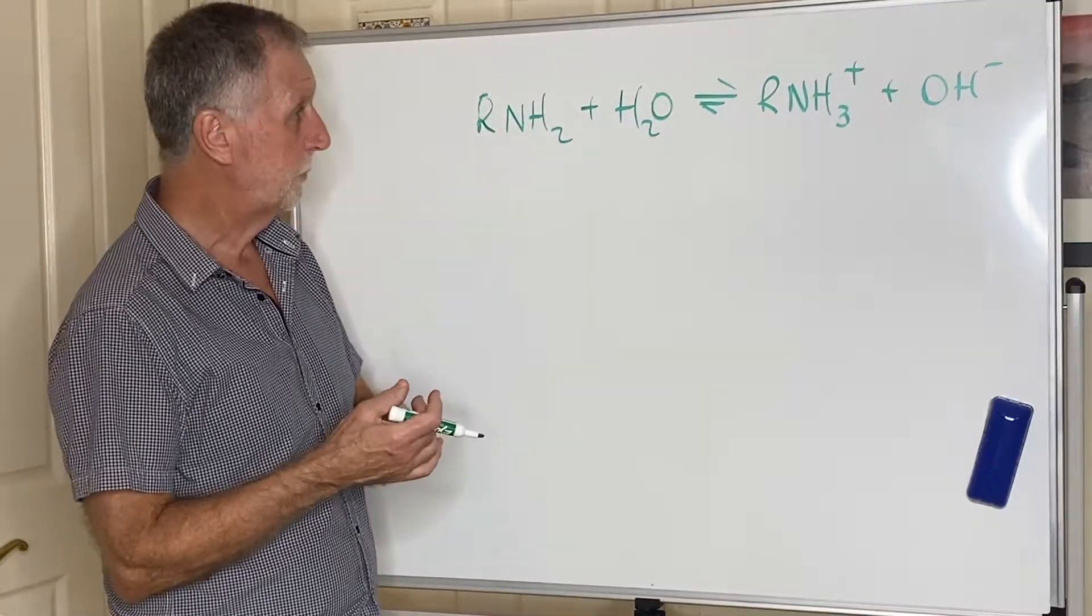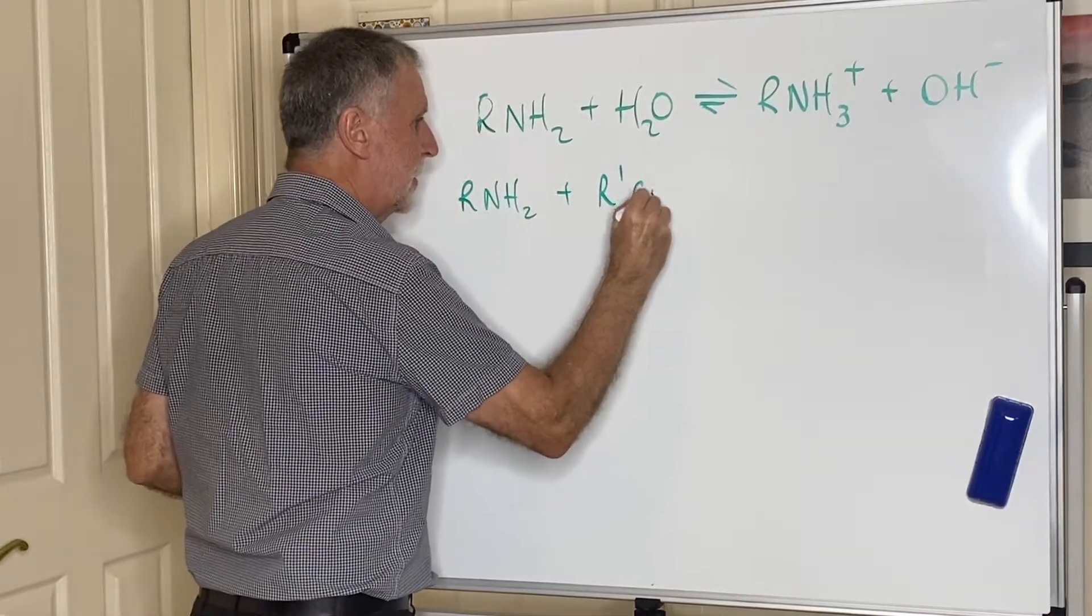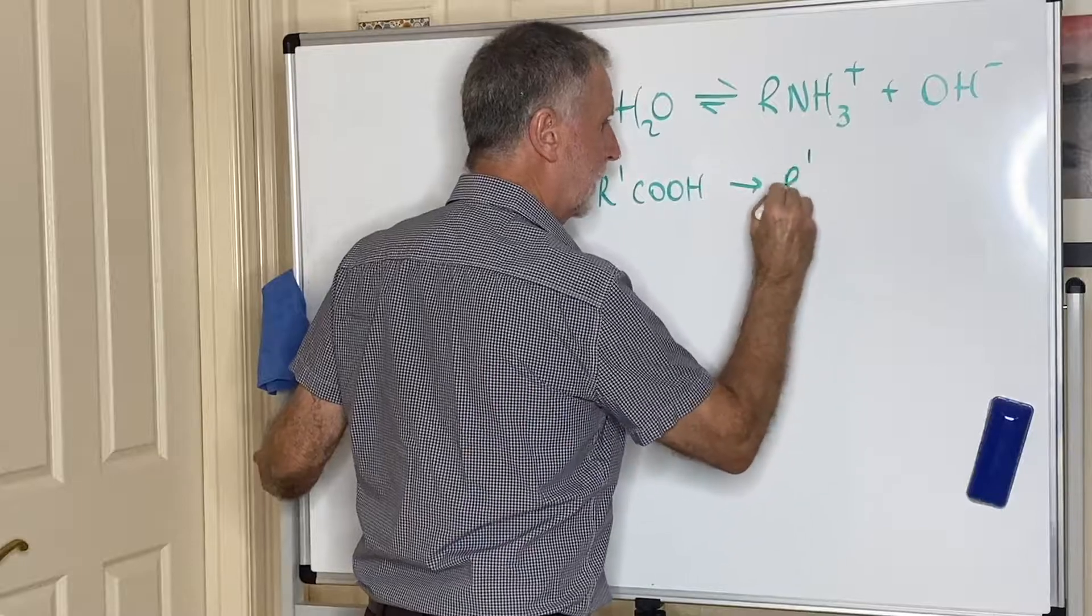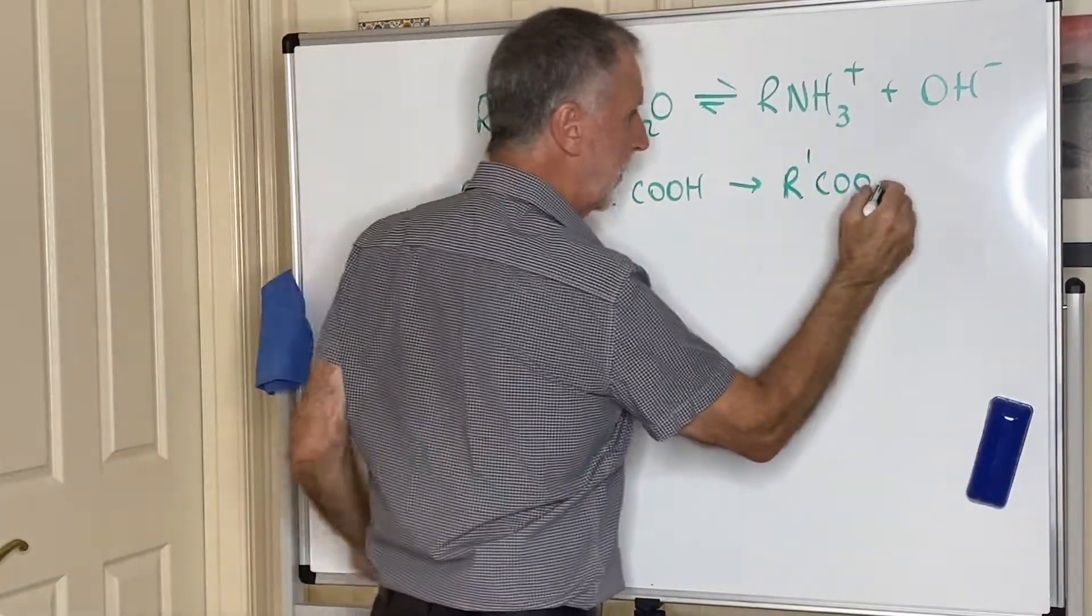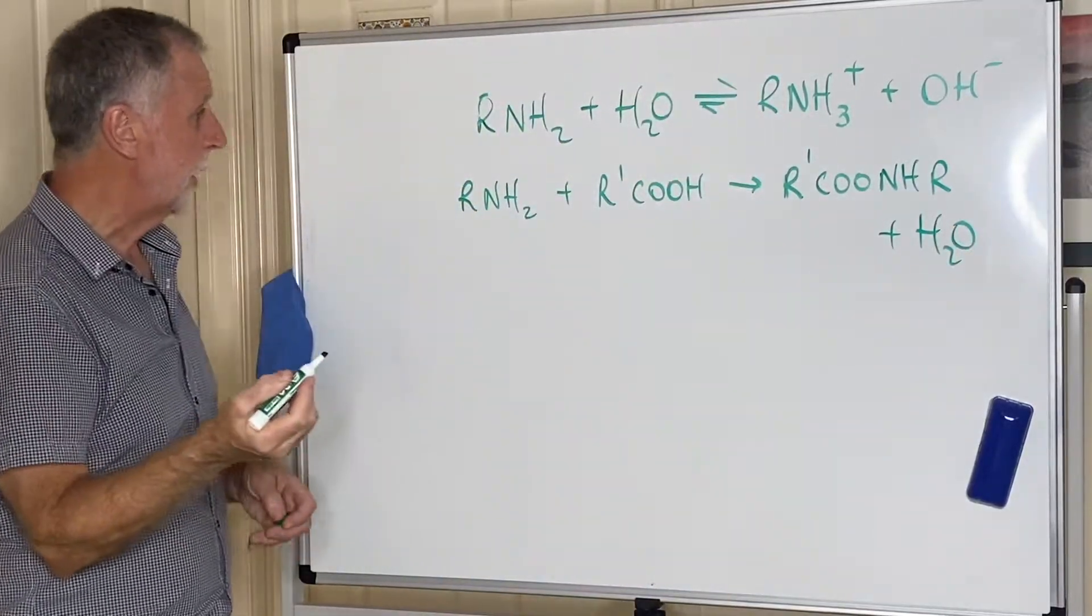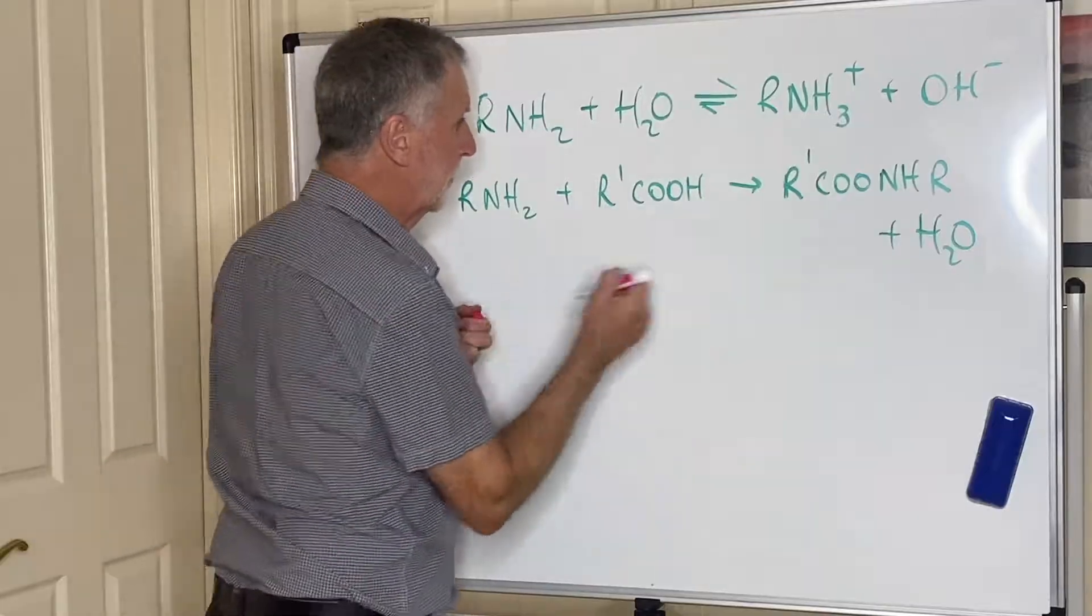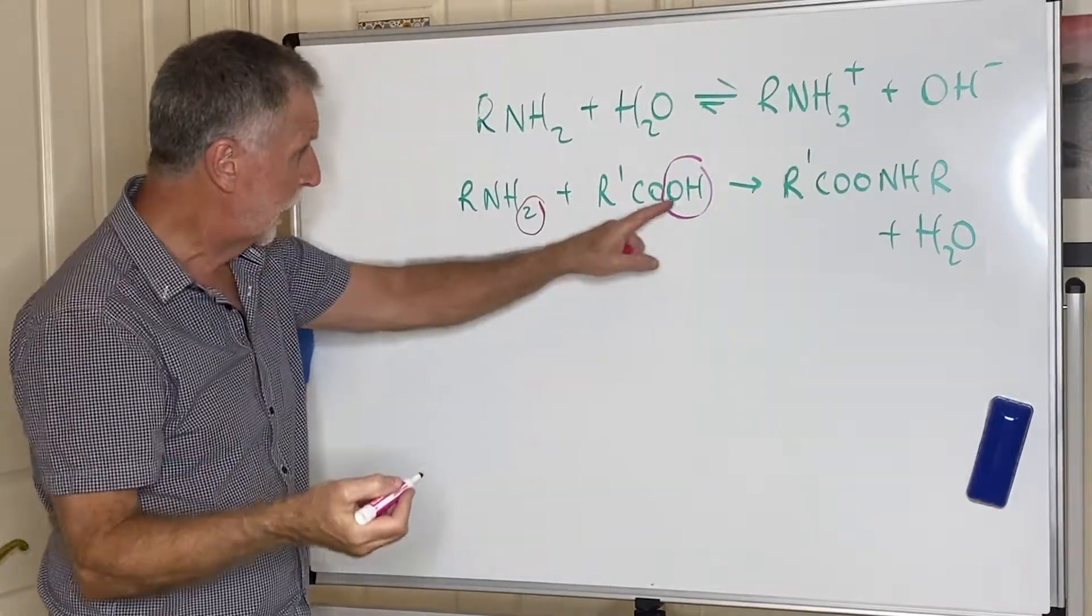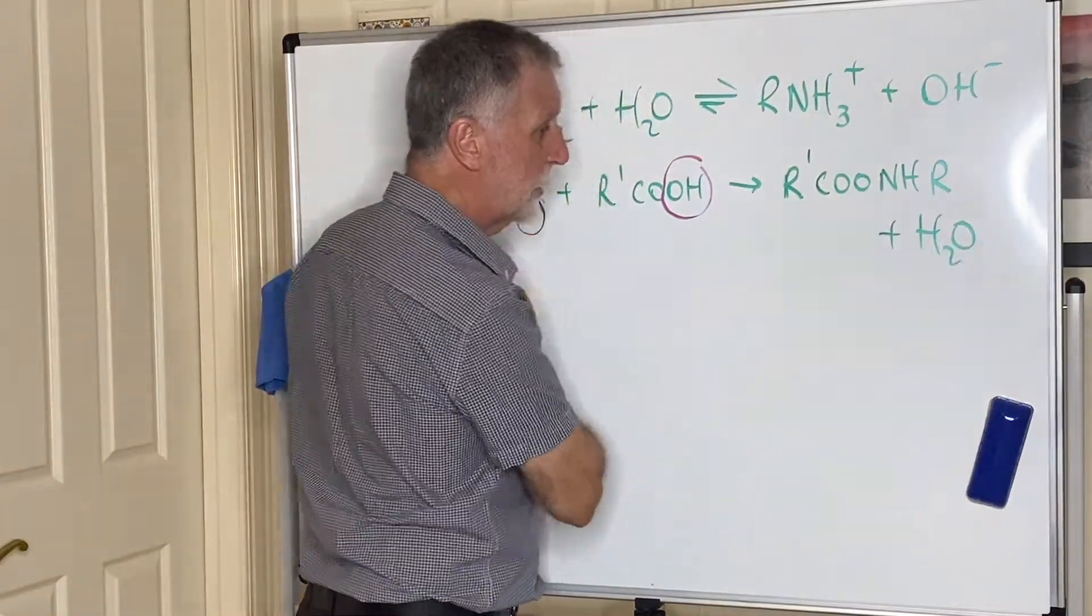The other thing amines can do, and this comes into polymer chemistry, if we take RNH2 and add R'COOH, what we will produce is, this is an amine, this is a carboxylic acid, we will produce R'COO, now the hydrogen that the OH goes from there, the hydrogen goes from there, so we will end up with R'CONHR and H2O. This is another condensation reaction. We have taken away water, OH from there, hydrogen from there, just like it did in the esterification reaction, water is being produced so this again is a condensation reaction. What we have formed of course is an amide as well as the water.